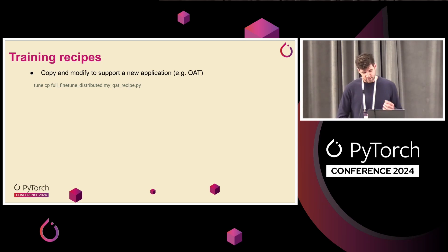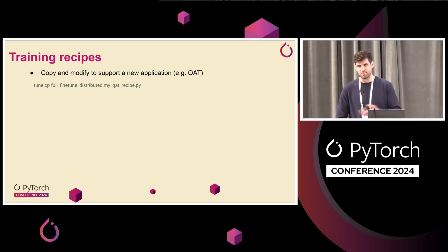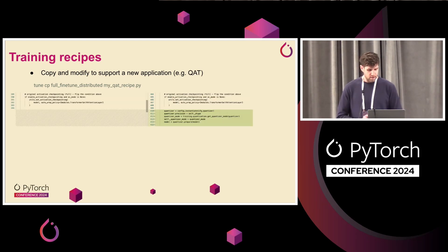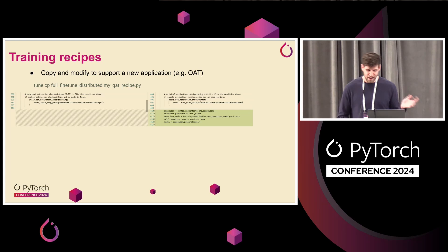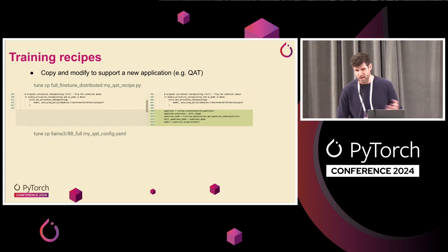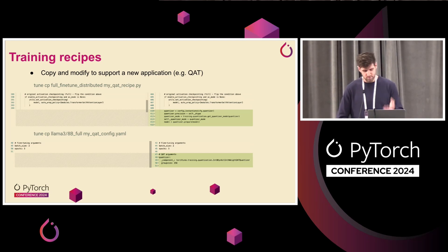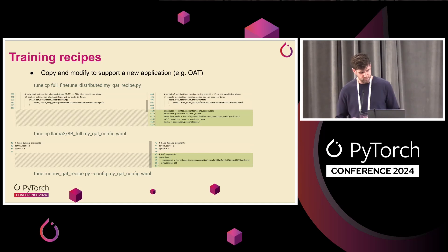Same principles for our training recipes. We have a CLI — you can just run tune.cp to copy a recipe and put it on a local path. Or if you just have the repo checked out, you don't even need to do that. Make some changes. Here we're looking at an example with quantization-aware training. This is literally all you need to do to enable quantization-aware training in TorchTune: change five lines in the recipe after you copy it, copy some config from a full fine-tune, add your QAT arguments to the config, and tune run with your local paths. That's it — now you've done quantization-aware training.